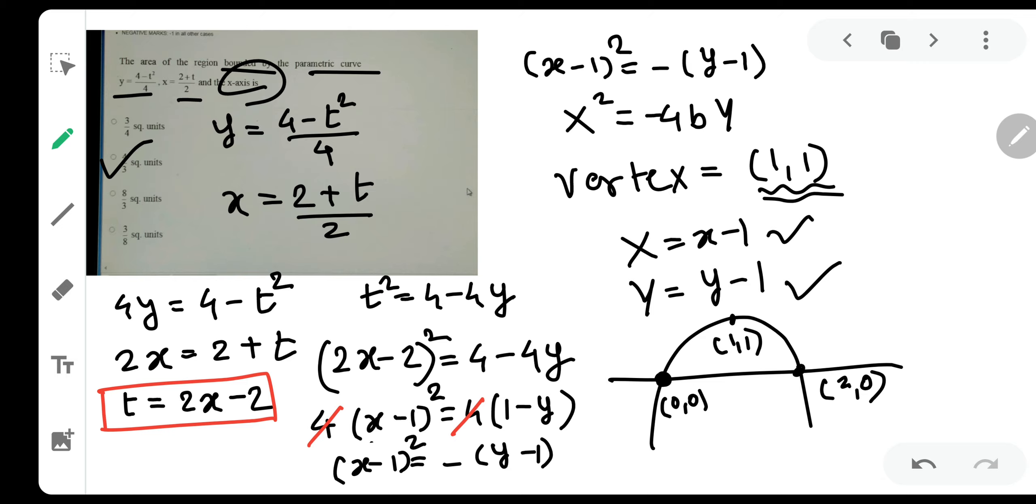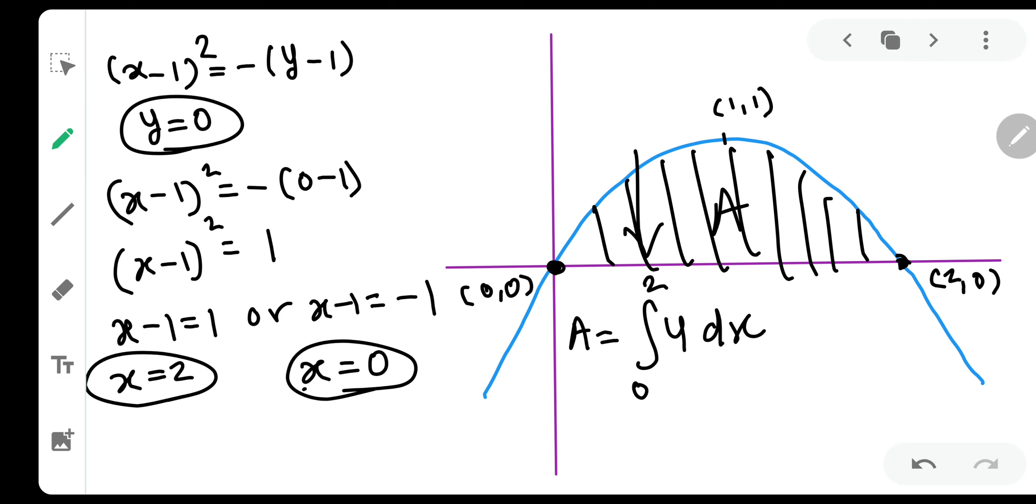This question was definitely very nice question. In which you needed to graph it properly. You needed to eliminate the parameter. You needed to understand that it is a parabola. You needed to understand that it is a vertically downwards parabola. You needed to understand where does it cut the x axis. So it had quadratic equations also involved in it. Then you needed to understand how to calculate the area. And then you needed to understand the definite integral.